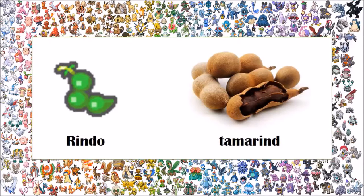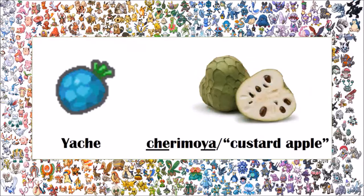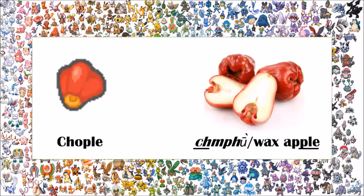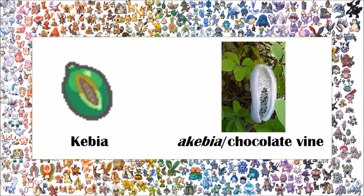The Rindo berry is based on the tamarind. The Yache berry is based on a real-life fruit which inspired a different Pokemon berry we will discuss later. The Yache gets its name from cherimoya, which is also commonly known as the custard apple — this fruit inspired a different Pokemon berry and has many other English names. The Chople berry is also inspired by a real-life fruit we'll discuss later. It gets its name from chimfu and wax apple, which is a portmanteau of its Japanese name and its English name — though wax apple is not its only name; it has a dozen others. The Kebia berry is based on the akebia, or chocolate vine as it is commonly known.